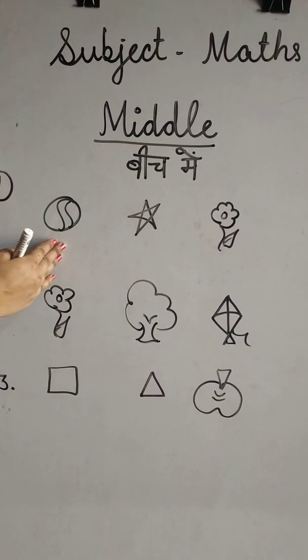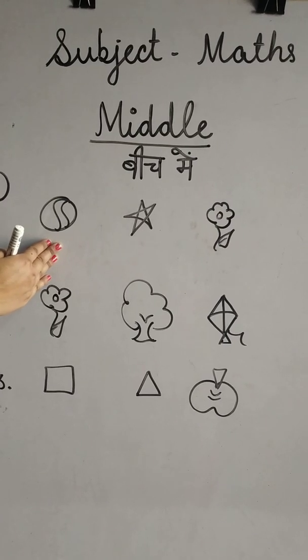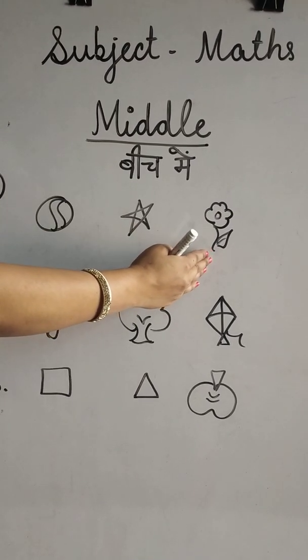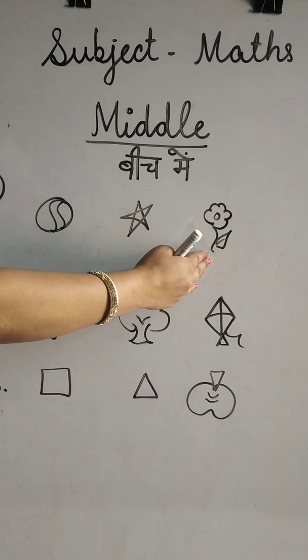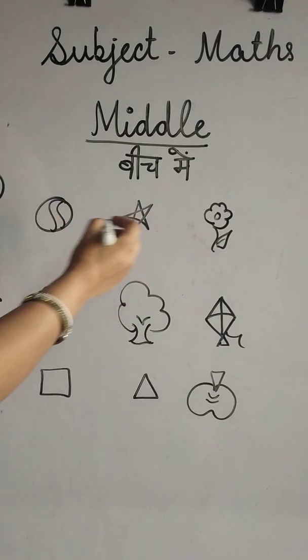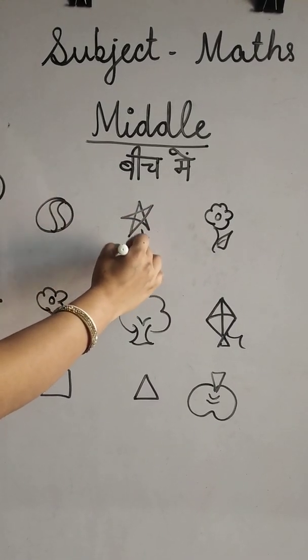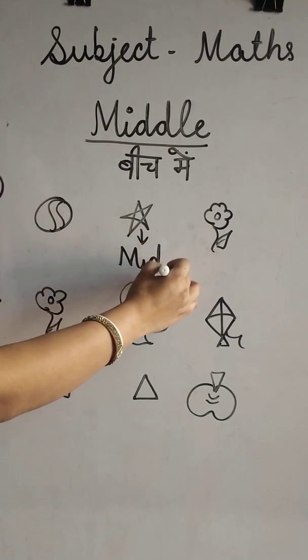Ball is on the left side. And flower is on right side. But the star is in the middle.